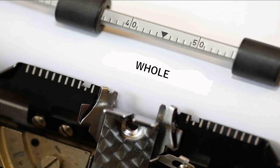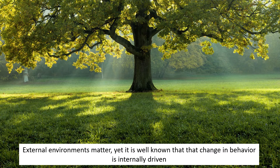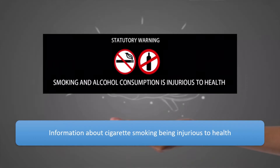Let's take the example of smoking to make this clear. It is certainly not easy to change the behavior of other people, but it is even more difficult perhaps to change our own behavior. External environments matter, yet it is well known that change in behavior is internally driven. So the individual is very important in their makeup. Consider information about cigarette smoking being injurious to health — all of us know this. You see it on cigarette packets, in advertisements at film theaters, from medical doctors, on hoardings through cities, and from health professionals you interact with.